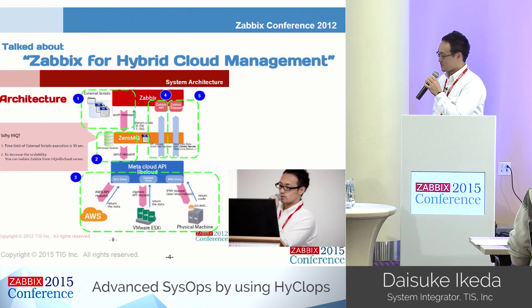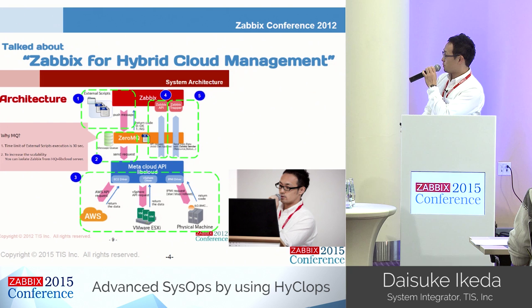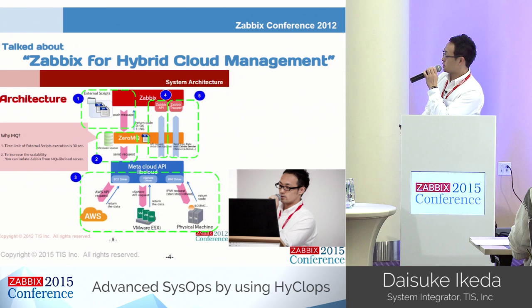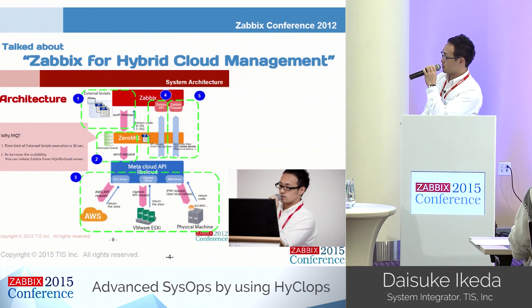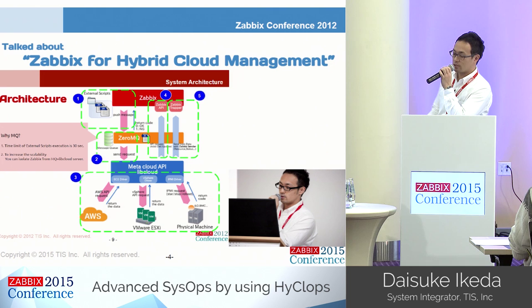Then I'll begin the main contents. Three years ago at Zabbix Conference 2012, I talked about Zabbix for hybrid cloud management. I introduced that we were developing a tool to make monitoring operations for hybrid cloud environments more convenient using Zabbix. We recognized that the integration of all data and the automation of some operations are very important in managing a hybrid cloud environment. Therefore, we were implementing features to monitor AWS and vSphere environments automatically using Zabbix API and Zabbix Sender.